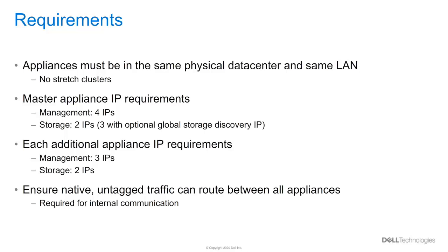Lastly, ensure that native untagged traffic can route between appliances if they are on different switches. This is required as the internal cluster communication uses untagged IPv6 packets. When adding an appliance to an existing cluster, the additional appliance will require the three additional management IPs and two storage IPs referenced above.